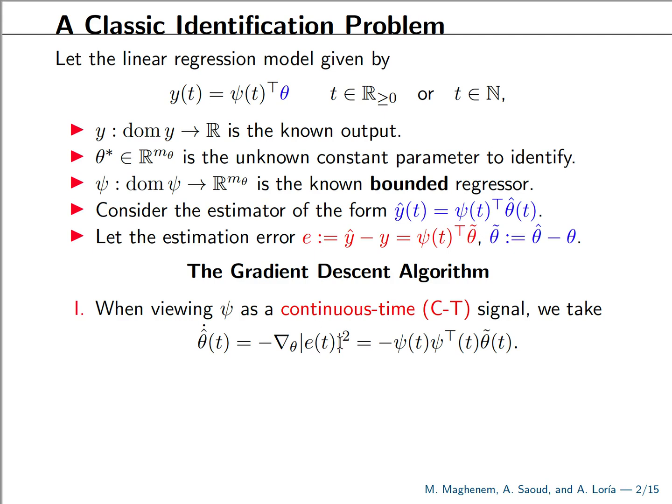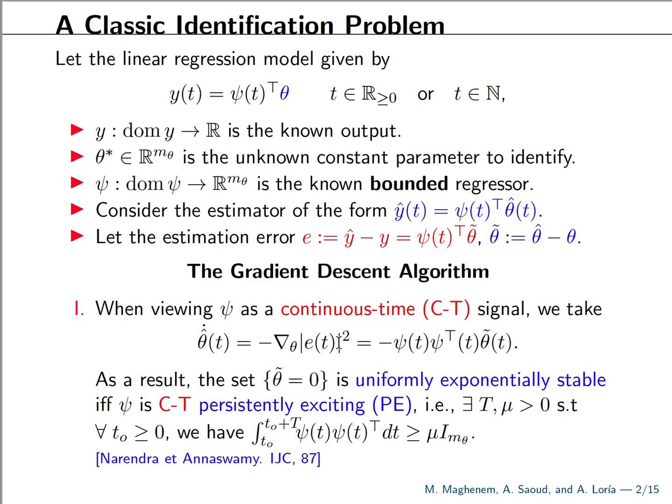That's why we call it a gradient-based estimation. It is well established that the estimation error, or the parametric estimation error, is uniformly exponentially stable if and only if the regressor signal psi verifies a continuous time persistence of excitation condition, which is given here.